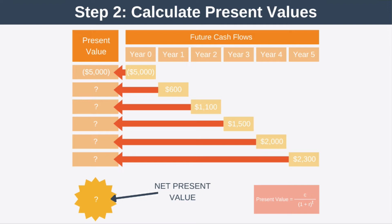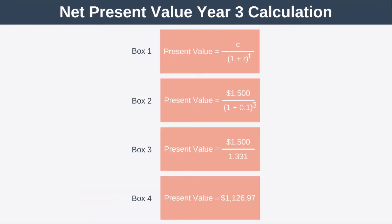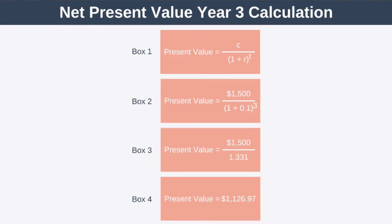So let's take a look at what this equation looks like for year three so that you really understand it. In box one, we have our present value formula for a single cash flow. In box two, we start substituting in our values, adding in our year three cash flow of $1,500, our discount rate of 10% which we put in as 0.1, and our exponent which is three, because we're calculating the present value of our year three cash flow. In box three, we work out the denominator, giving 1.331. Finally, we divide our $1,500 by 1.331 to get a present value for our year three cash flow of $1,126.97, as you can see in box four.